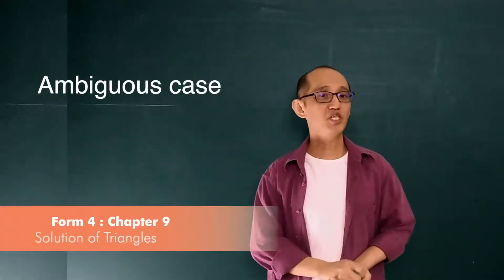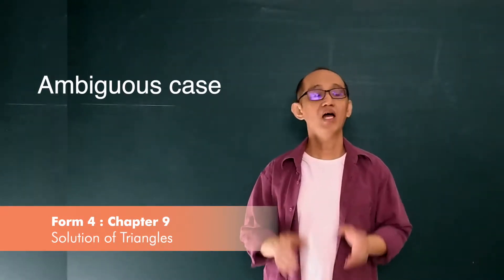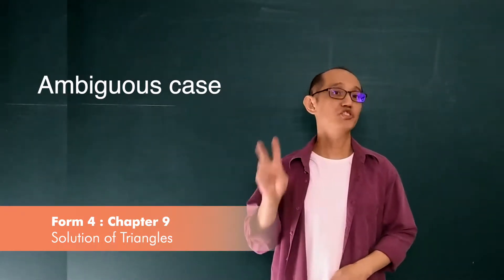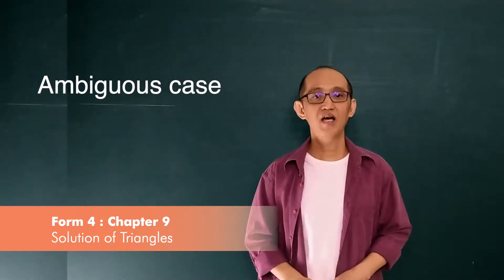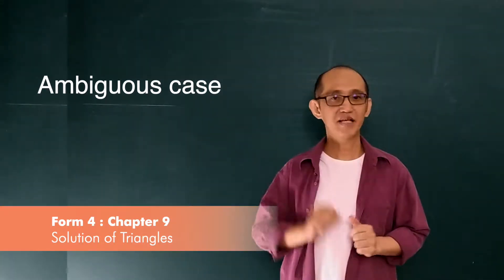Next, we look at ambiguous case. Ambiguous case happens when we can construct two triangles, two different triangles, from a set of given information. Let's look at this example.